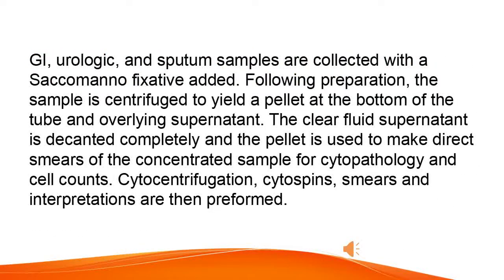GI, urologic, and sputum samples are collected with a Saccomano fixative added. Following preparation, the sample is centrifuged to yield a pellet at the bottom of the tube and overlying supernatant. The clear fluid supernatant is decanted completely and the pellet is used to make direct smears of the concentrated sample for cytopathology and cell counts. Cytocentrifugation, cytospins, smears and interpretations are then performed.